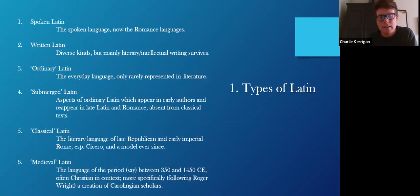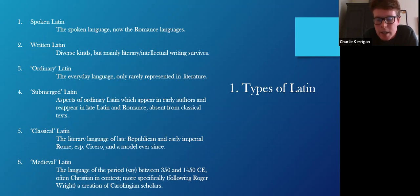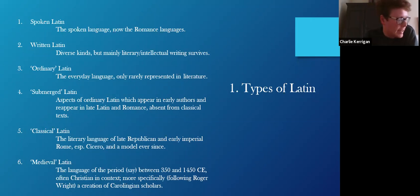Last but not least, we have medieval Latin. One of the things I want to get across is that there's no such thing as medieval Latin — or to be less controversial about it, medieval Latin is far too broad a thing to work in any real way. There are so many different kinds of Latin text, and to group everything from a thousand years — between 350 and 1450, say — into one bracket of medieval Latin is too simplistic. It's fine as a casual term, but you want to be more precise. I'm going to talk about one argument by a scholar called Roger Wright, which would see medieval Latin as a creation of the Carolingian period — the court of Charlemagne at the beginning of the ninth century in what is now France.